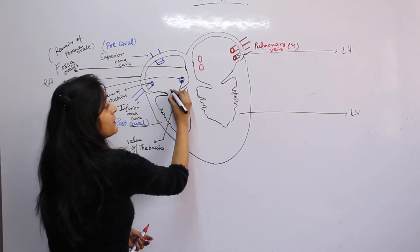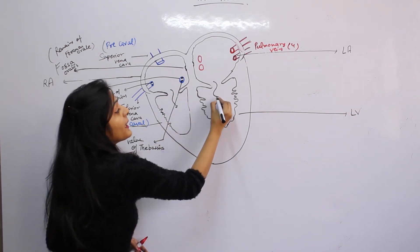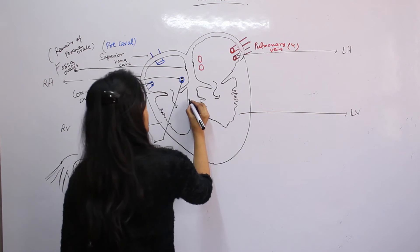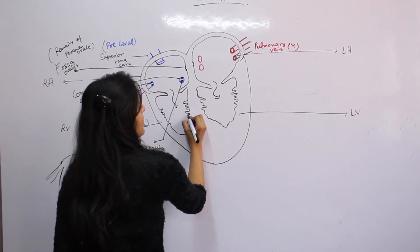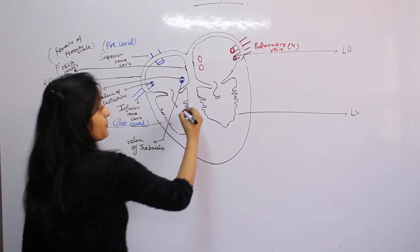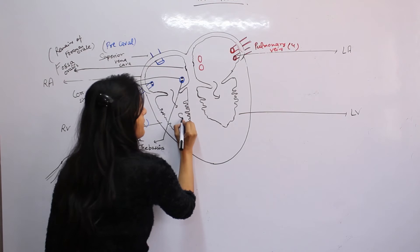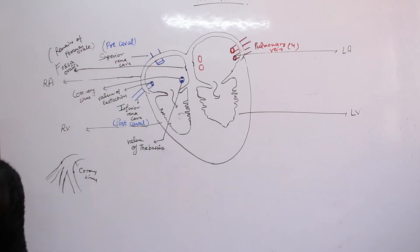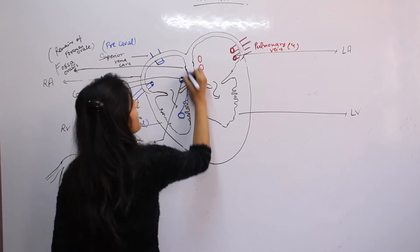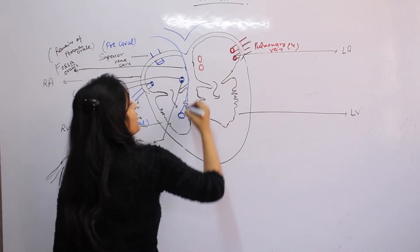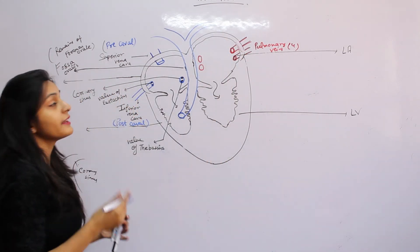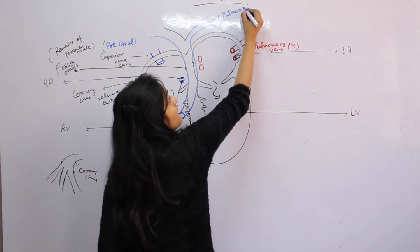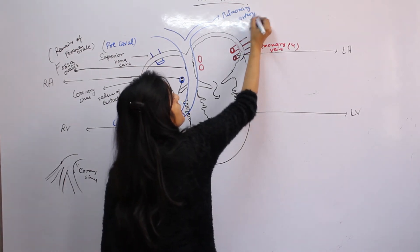This chamber contains oxygenated blood. Now where will it go? The ventricle will pump it out. First, from here, the blood leads to the lungs via the pulmonary artery. Again, an exception: arteries usually carry oxygenated blood, but pulmonary artery carries deoxygenated blood.